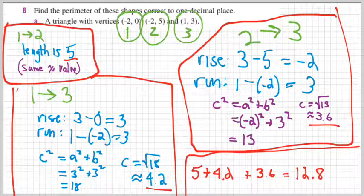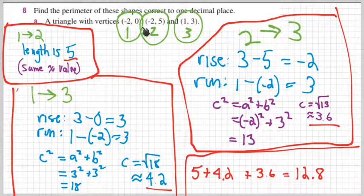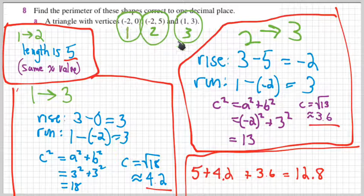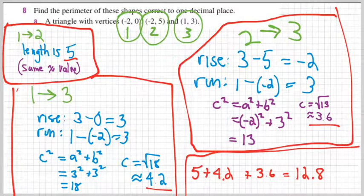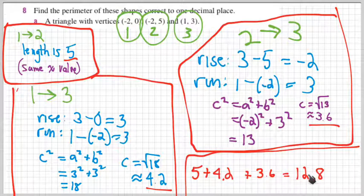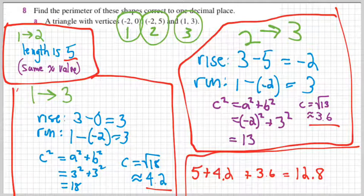I realized as well, actually for finding the distance, it doesn't matter which order you go in. I could have done 3 minus 0 and negative 2 minus 1. But for finding the slope, of course, being consistent there matters. Anyway, if you have questions, feel free to leave them in the comments, and see you next time.